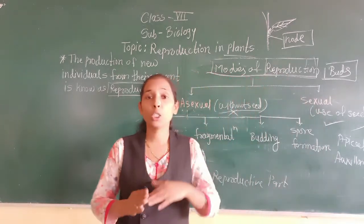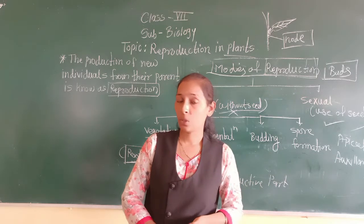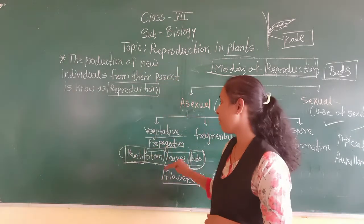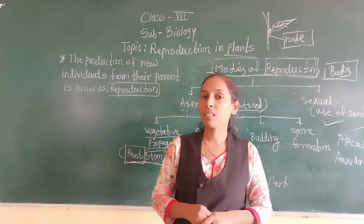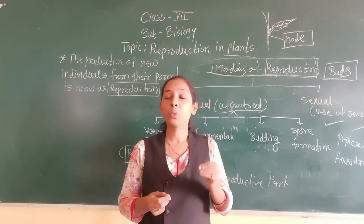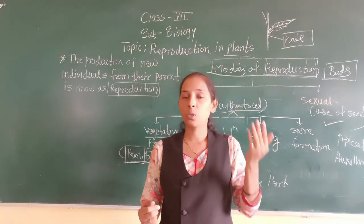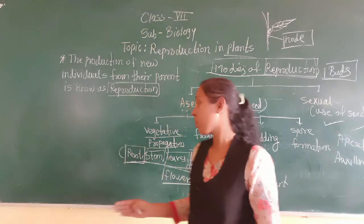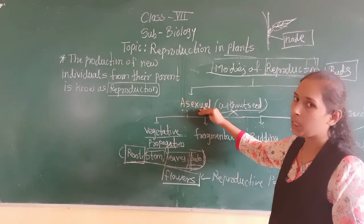In vegetative propagation, the new plants formed will be the exact copy of their parents — they will look similar to the parents. Also, with the reproduction with the help of vegetative propagation, there is less time to grow the plants as compared to reproduction with the help of the seed. This means the plants will grow more rapidly with vegetative propagation as compared to growing a plant from a seed. This is the first method of asexual reproduction.